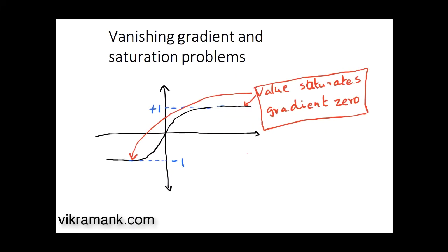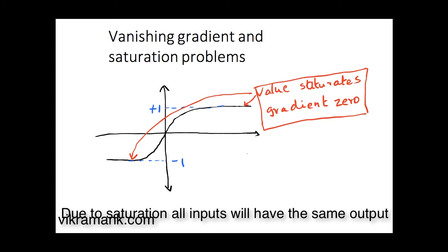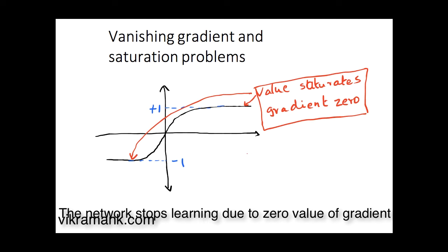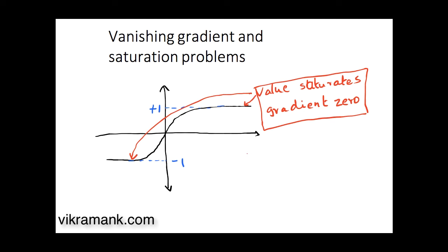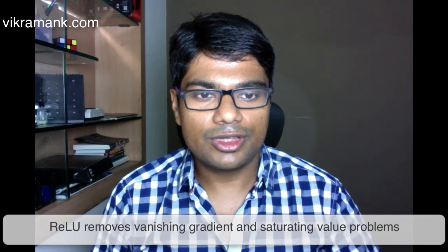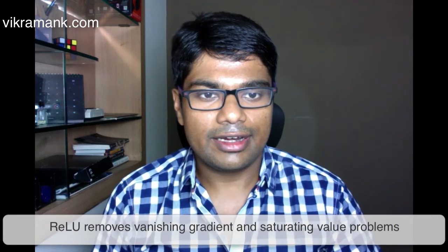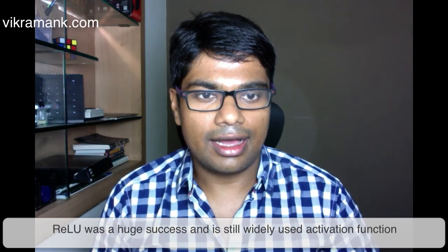This is the plot of a standard tanh function. You can see that for values much less than 0 the output saturates to minus 1, and for values much greater than 0 it saturates to plus 1. At these saturation points the gradient will be 0 and the network won't learn anything. These are the prominent problems of sigmoid and tanh: the gradient vanishes after a certain point and the value saturates. ReLU was able to remove these two key problems that hindered the progress of neural networks.